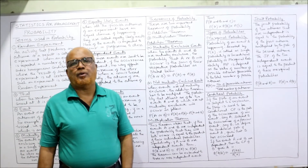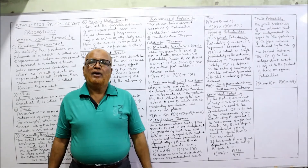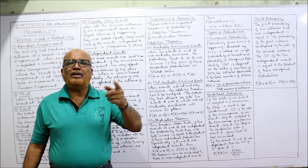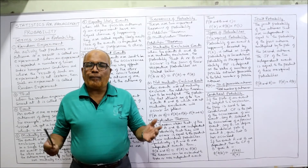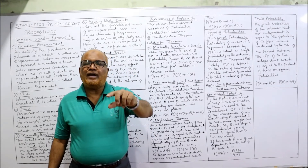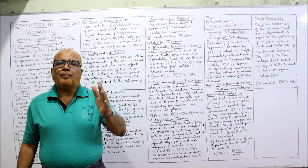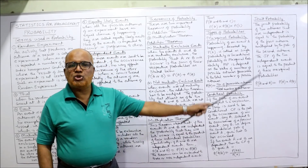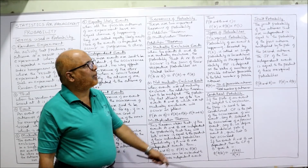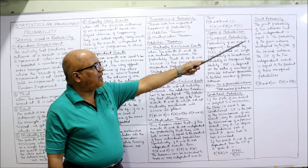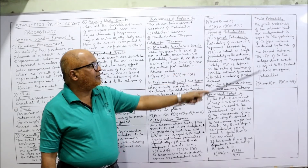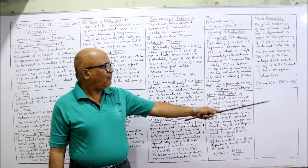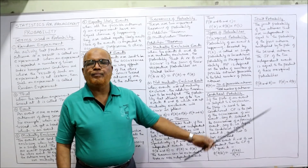The last type is joint probability, meaning combined probability. If two independent events A and B are there, the probability that both A and B will occur is found by applying the multiplication theorem: P(A and B) = P(A) × P(B). For three events: P(A and B and C) = P(A) × P(B) × P(C). To find joint probability, multiply the individual probabilities. Joint probability of two independent events equals the product of their marginal probabilities.